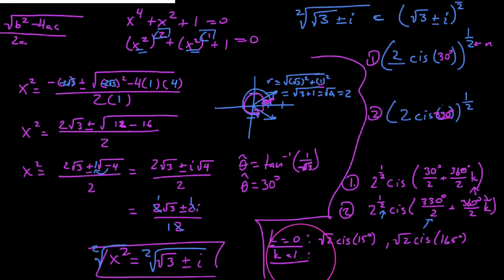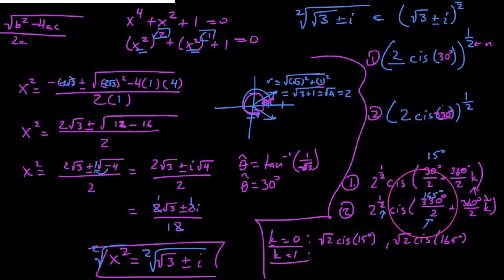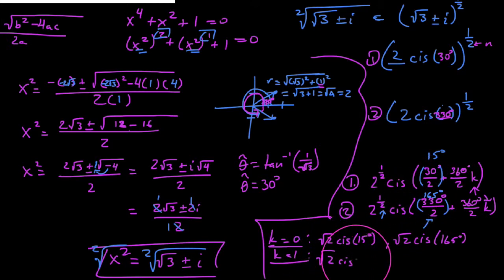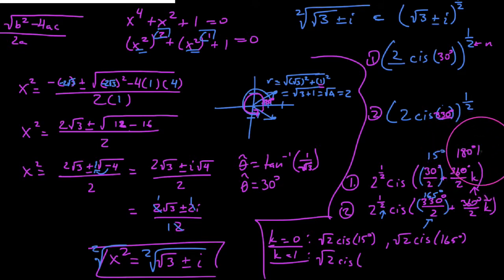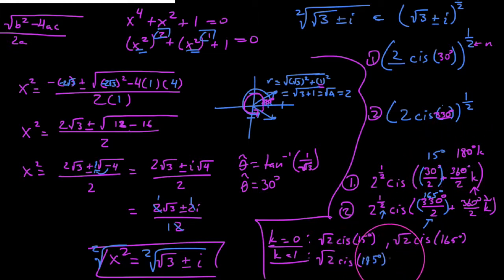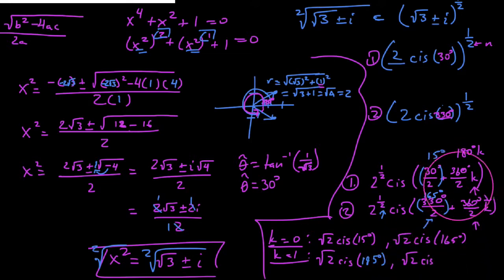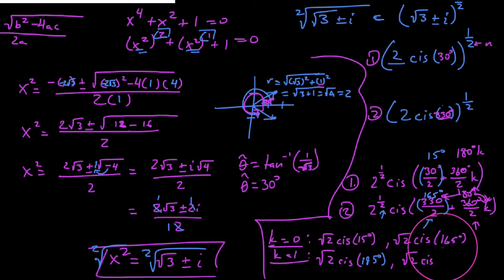When I plug in k equals 1, I get √2·cis of 15 plus 180 degrees times 1, so I get 195 degrees. And for the second case plugging in k equals 1, we're adding 180 degrees times 1 to 165, which gives us 345 degrees.